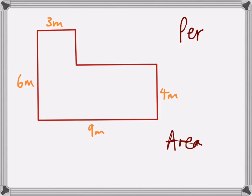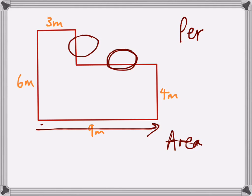So let's start with perimeter. To work out the perimeter you need to know all of the dimensions. At the moment we only know four of them. So we have a mystery dimension here and a mystery dimension here. You cannot measure them because quite often they are drawn not to scale, so you have to do some calculating.